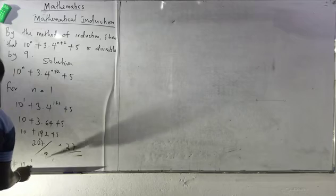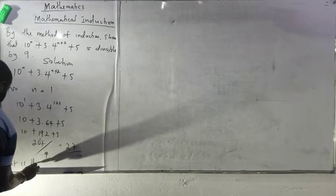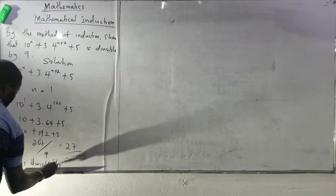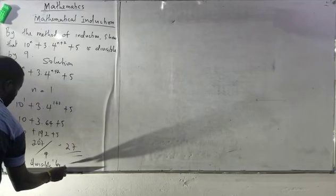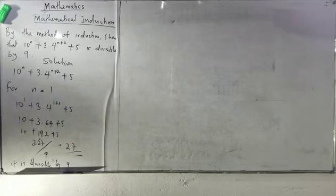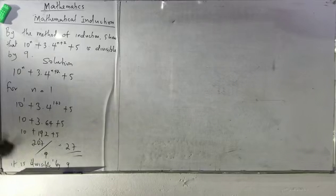Therefore, it is divisible by 9 without any remainder. That is the first thing — the base case is verified.